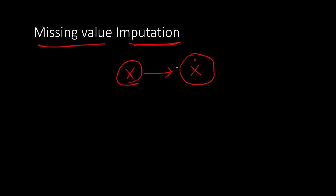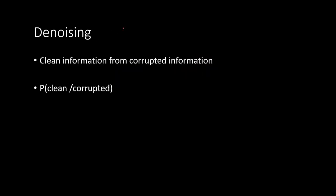Denoising is a type of problem where you need to clean information from corrupted information. The corrupted information is given as input and the system has to find the clean information from it. Essentially, the system estimates the conditional probability of clean information given the corrupted information.